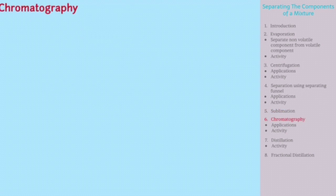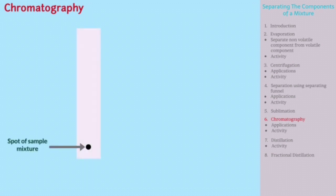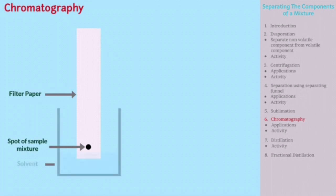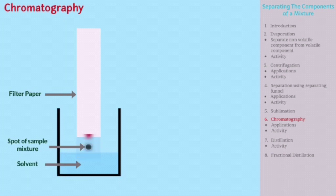Next method is chromatography. In this method, a spot of sample mixture — for example, ink — is applied on filter paper, and then the filter paper is placed in a solvent such as water. Components in the mixture which are more soluble in the solvent rise faster on the filter paper.